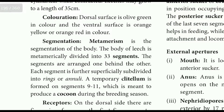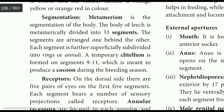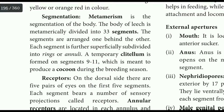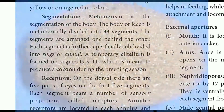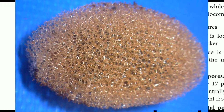Segmentation — the division is called segmentation or metamerism. The leech has 33 segments. Each segment is subdivided into rings or annuli. The clitellum is the 9th to 11th segment and produces a cocoon during the breeding season.